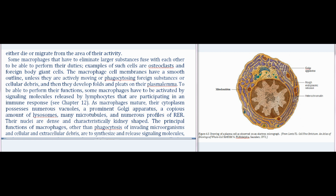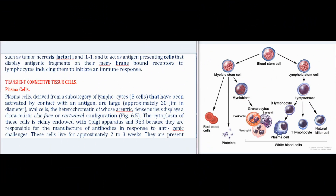The macrophage cell membrane has a smooth outline unless actively moving or phagocytosing, when it develops folds and pleats. Some macrophages must be activated by signaling molecules released by lymphocytes participating in an immune response. As macrophages mature, their cytoplasm possesses numerous vacuoles, a prominent Golgi apparatus, copious lysosomes, many microtubules, and numerous profiles of RER; their nuclei are dense and characteristically kidney-shaped. Principal functions include phagocytosis of microorganisms and debris, synthesis and release of tumor necrosis factor and IL-1, and acting as antigen-presenting cells to lymphocytes to initiate an immune response.